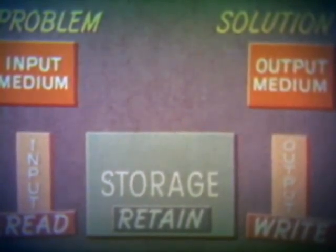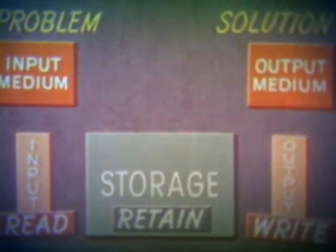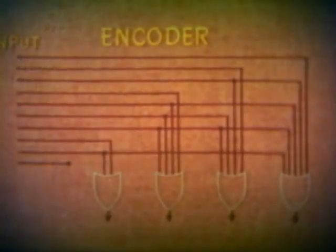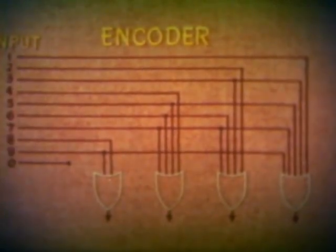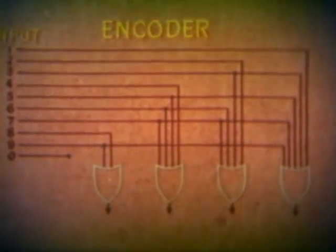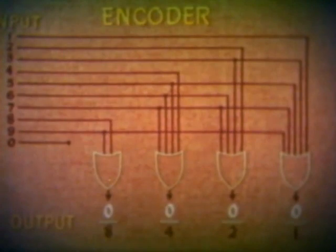When the computer input reads the input medium information, the decimal numbers and other data are encoded into binary digits. One type of encoder is a rather simple circuit of four OR gates, with the input designed to receive the decimal numerals one at a time. Each is converted to a four-bit binary combination, which can be stored.